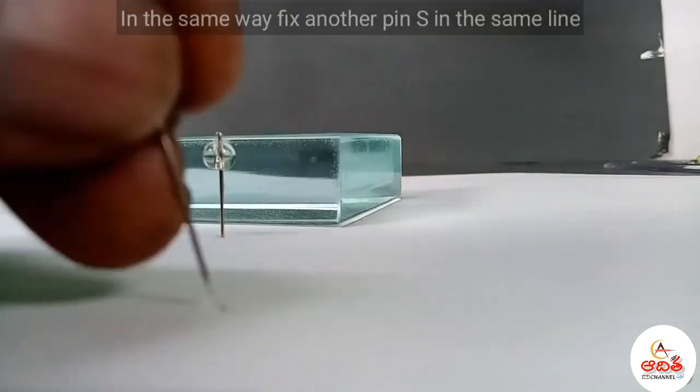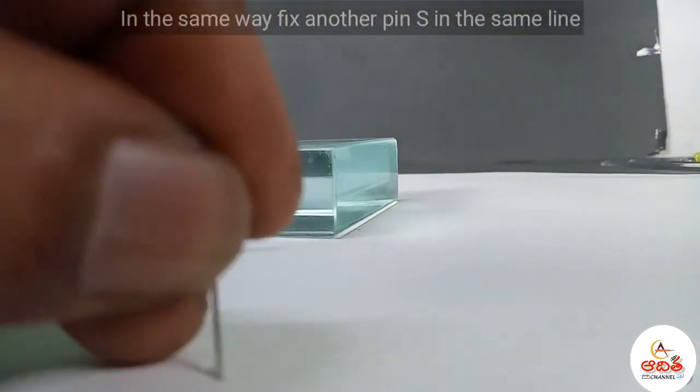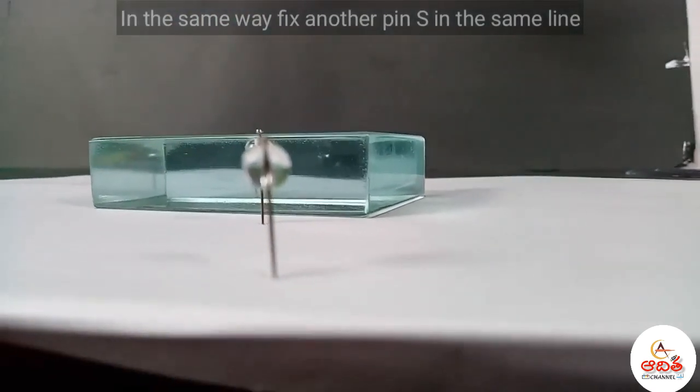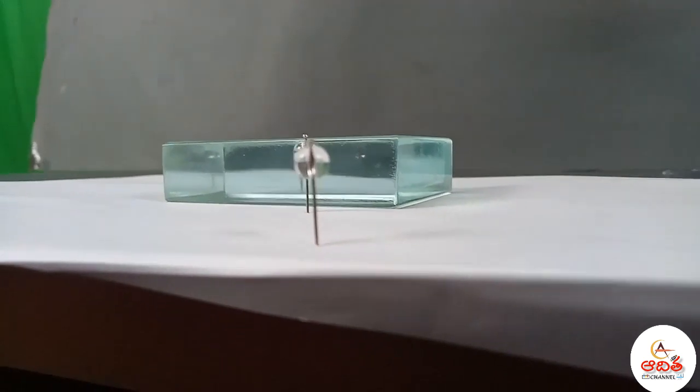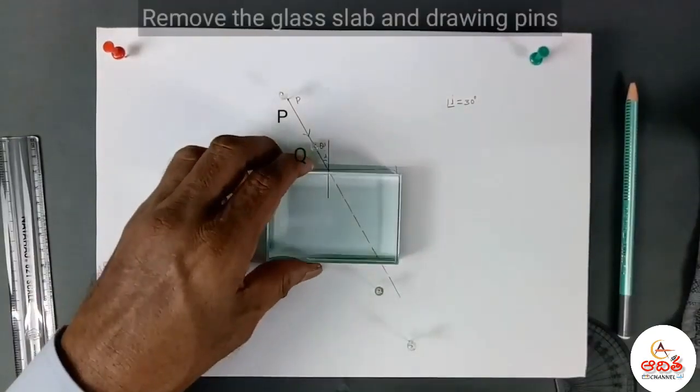In the same way, fix another pin S in the same line. Remove the glass slab and drawing pins.